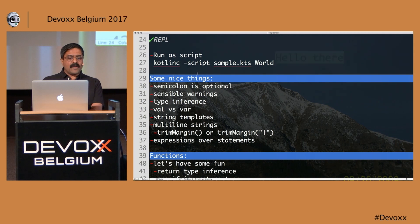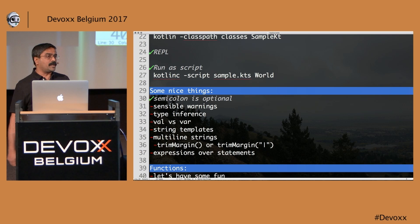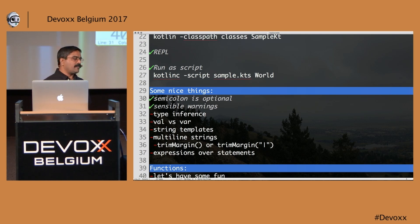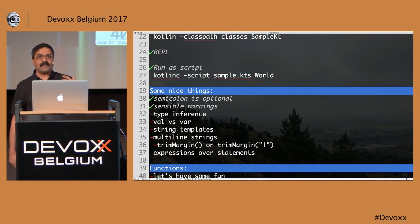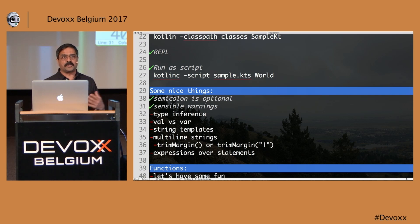Now that we've done that, let's talk about some of the really nice interesting features. Semicolons are optional, so you don't have to use them. One of the things I really like about Kotlin is sensible warnings — if you're trying to use a variable but haven't really used or initialized it properly, you'll constantly get warnings, which can be really useful to prevent errors from the get-go.